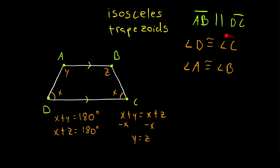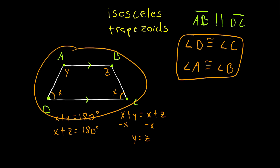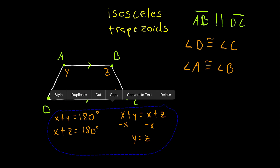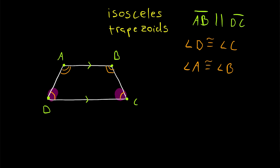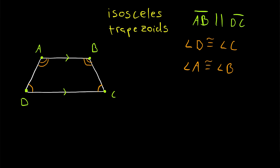Take care to note that these two angles are not congruent to these two. So angle D is congruent to angle C, and angle A is congruent to angle B, but all four of them are not congruent to each other. If they were all congruent, we would actually have a rectangle, which has two pairs of parallel sides, whereas a trapezoid has only one pair. So an isosceles trapezoid is a trapezoid that has a pair of congruent base angles, and if it has one pair of congruent base angles, the other pair must also be congruent.